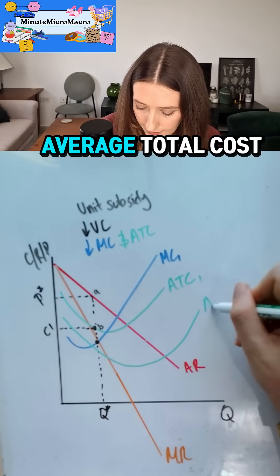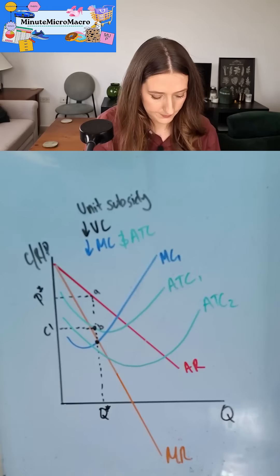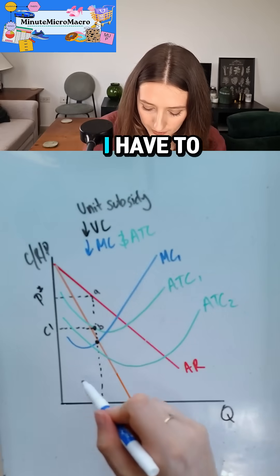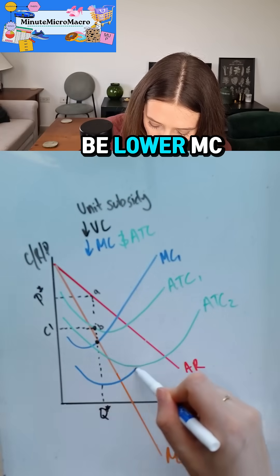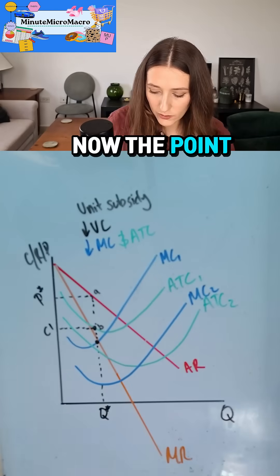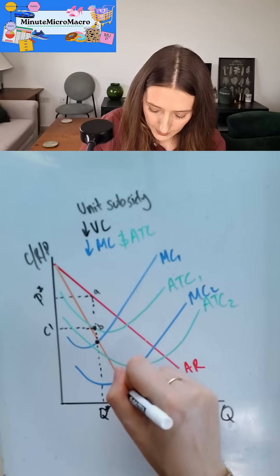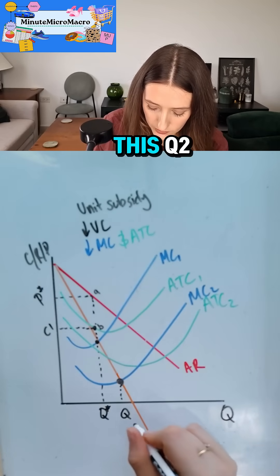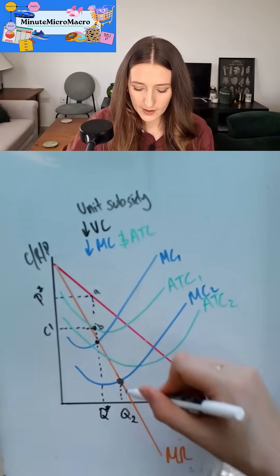I'm going to show average total cost falling. Average total cost 2 has to cut through the minimum points, so my marginal cost is going to be lower, MC2.